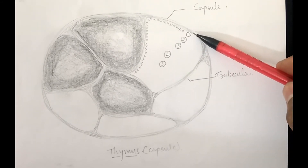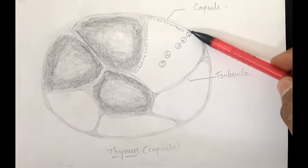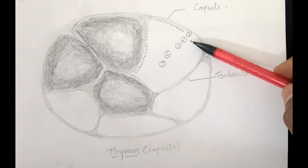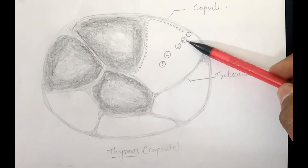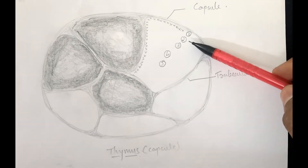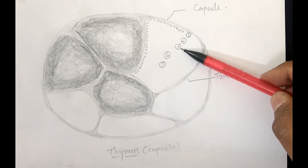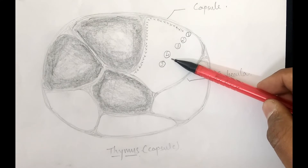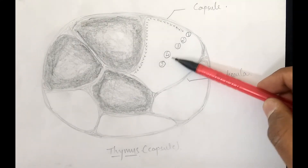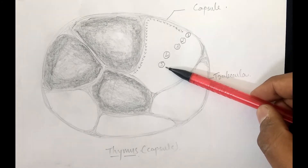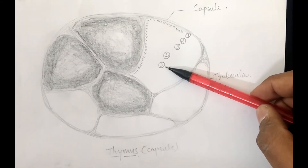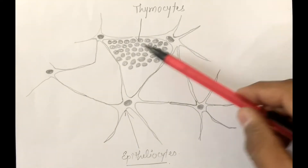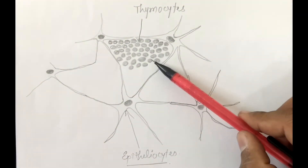Epitheliosites are classified into five types as per their location, as shown in this diagram. Those present just beneath the capsule and in the outer portions of the cortex are known as type 1 epitheliosites. Those in the outer portion of the cortex are type 2. Those in the inner portion of the cortex are type 3. Type 4 epitheliosites are present in the medulla of the thymic lobule, and type 5 are present around Hassall's corpuscles.